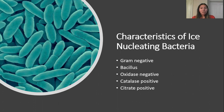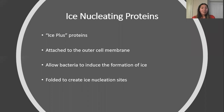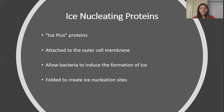And they are also citrate positive, meaning that they can use citrate as a source of energy. Now let's talk about ice nucleating proteins, also called ice plus proteins. They are found attached to the outer cell membrane, and ice nucleating proteins allow bacteria to induce the formation of ice. They also fold themselves to create ice nucleation sites.